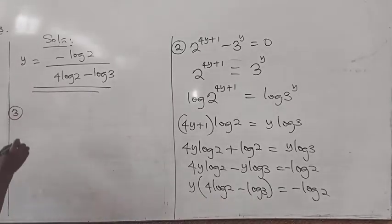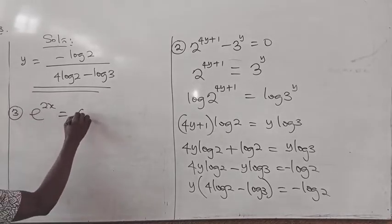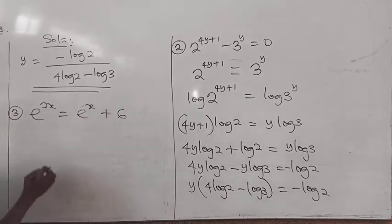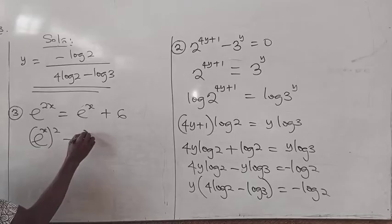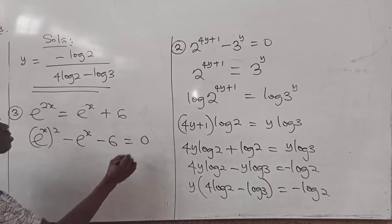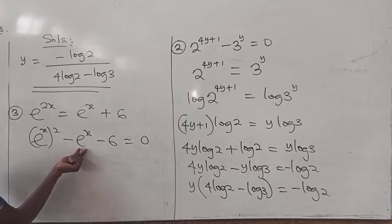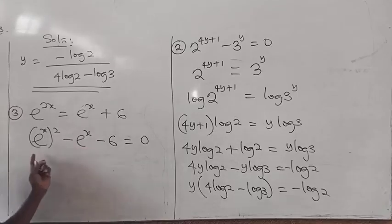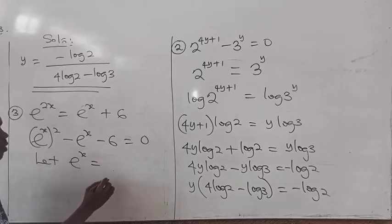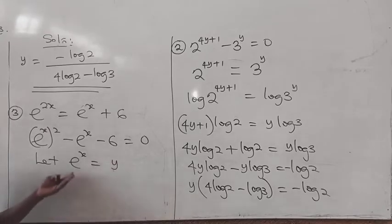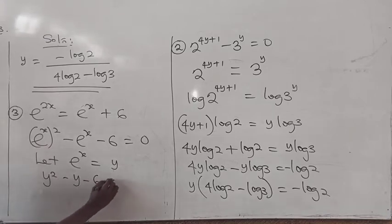For the third example, we have e^(2x) equal to e^x plus 6. Rearranging everything to one side gives (e^x) squared minus e^x minus 6 equal to 0. We can see the common term e^x, so we substitute y for e^x. That gives us the quadratic y squared minus y minus 6 equal to 0.